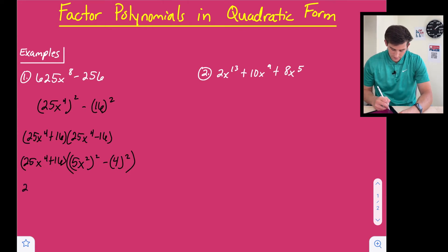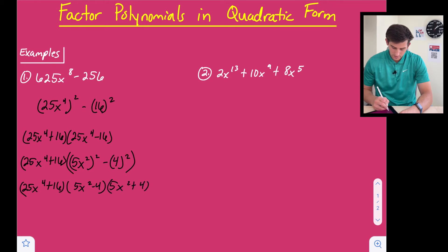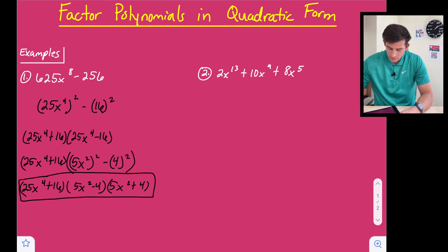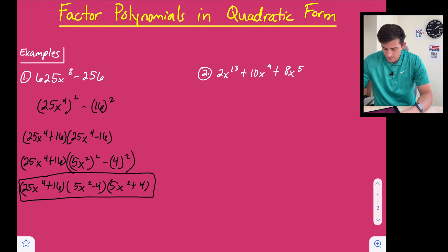Applying the sum and difference pattern again, we get (25x to the fourth plus 16) times (5x squared minus 4) times (5x squared plus 4), and that is our final complete factorization for number one.